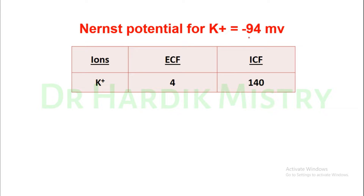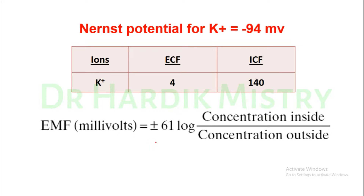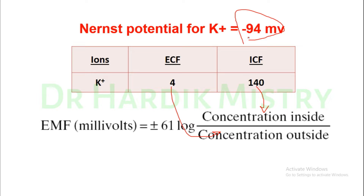The Nernst potential for potassium ion is minus 94 mV. The EMF equals plus or minus 61 log of the potassium concentration inside the cell divided by the potassium concentration outside the cell. We place the ICF value inside and the ECF value outside. You can verify this with a calculator and will get roughly minus 94 mV for potassium and plus 61 mV for sodium.